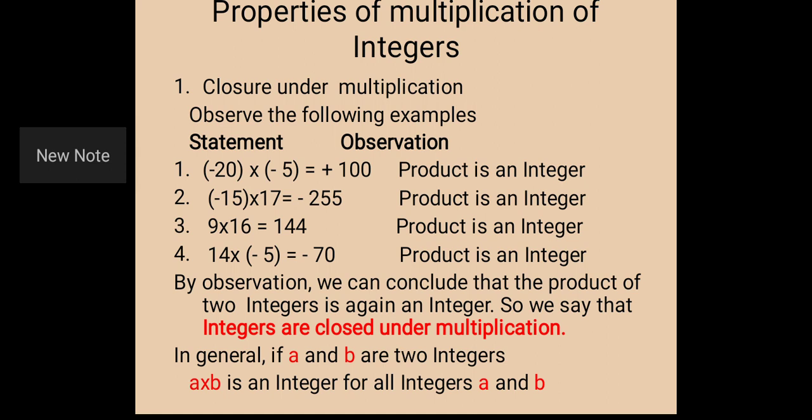Third: 9 into 16 is equal to 144 — product is an integer. Fourth: 14 into minus 5 is equal to minus 70 — product is an integer. By observation, we can conclude that the product of two integers is again an integer. So we say that integers are closed under multiplication.